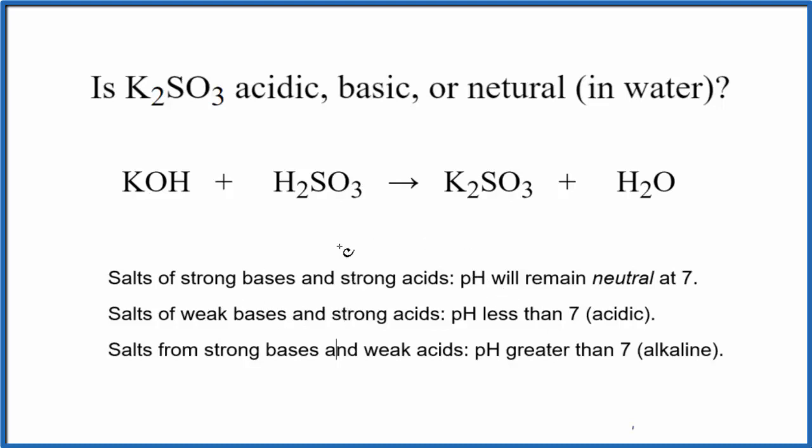Before we use the rules, we need to know the equation that produces this potassium sulfite. It's a neutralization reaction. We have a base, potassium hydroxide, plus sulfurous acid, that makes our K2SO3 and H2O, since it's a neutralization reaction.